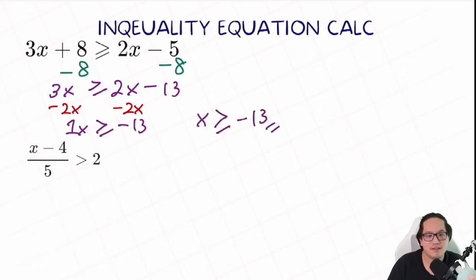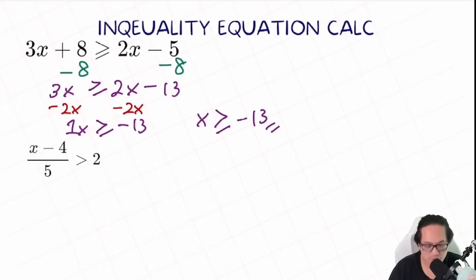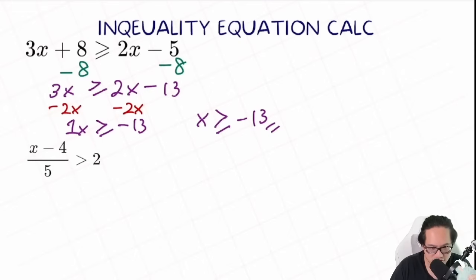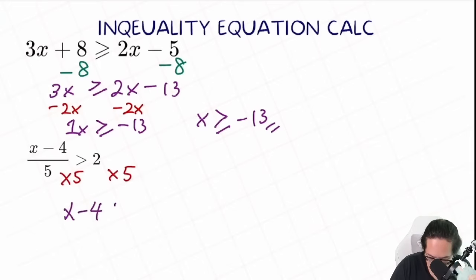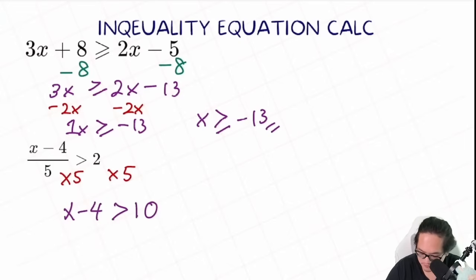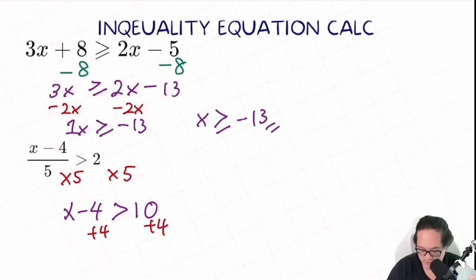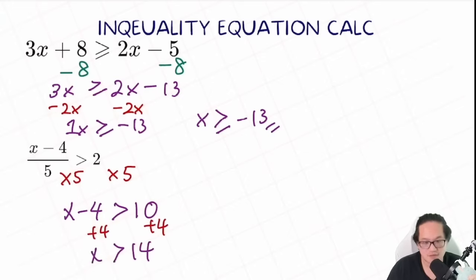Let's try another one: x minus 4 over 5 larger than 2. Since this is over 5, which is just divided by 5, we multiply 5 on both sides. We have x minus 4 on one side, larger than 2 multiplied by 5, equal to 10. Then we plus 4 on both sides. So x is larger than 14. Just like that.